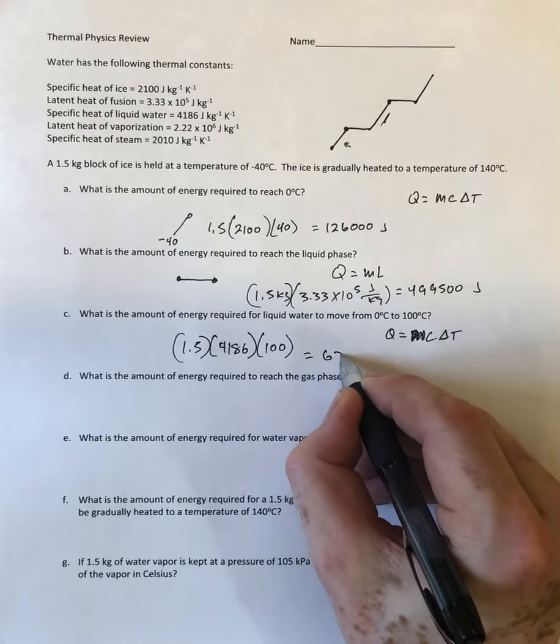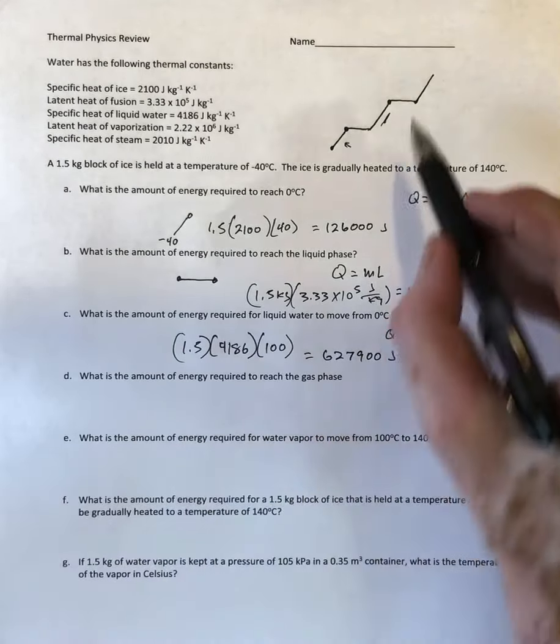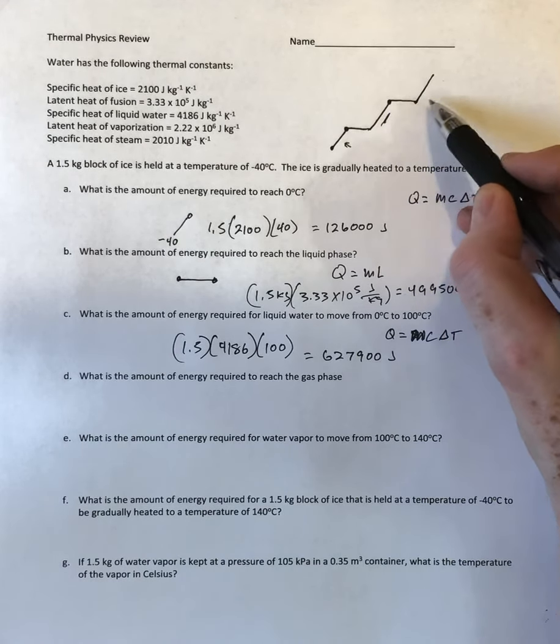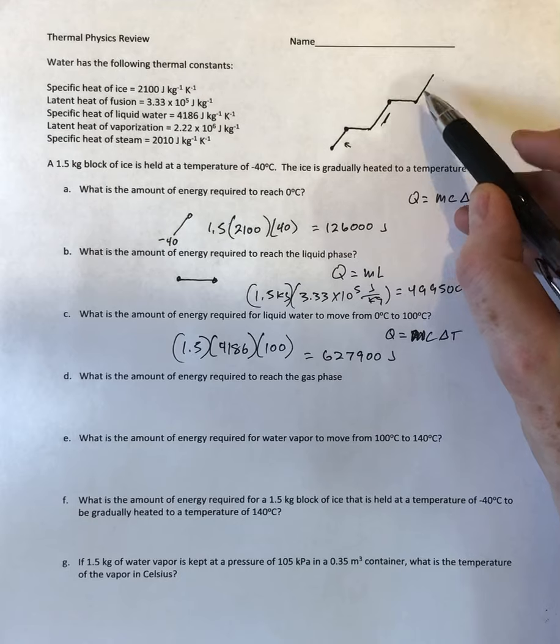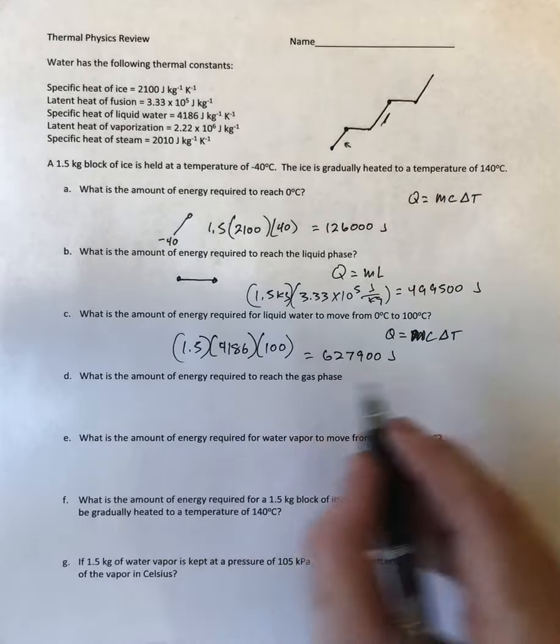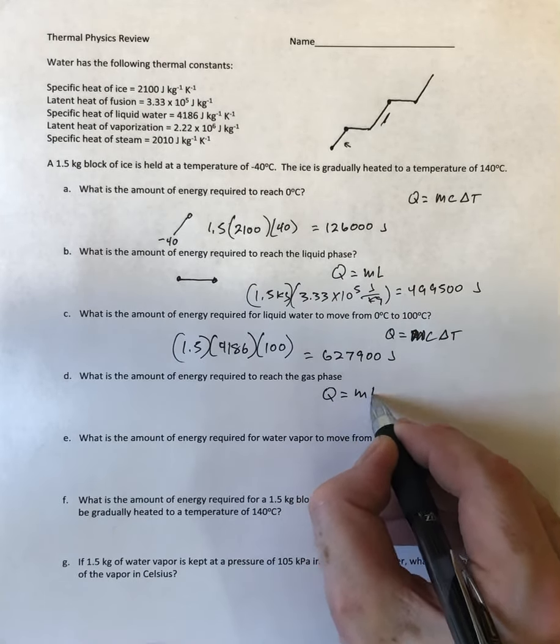Next phase, I want to go to the gas phase. This is a flat phase here because I'm not changing temperature, I'm just going from liquid to gas. So I'm going to use what I did here, the second one, which is Q is equal to mass times latent heat, and we're going to use the latent heat of vaporization in this case.